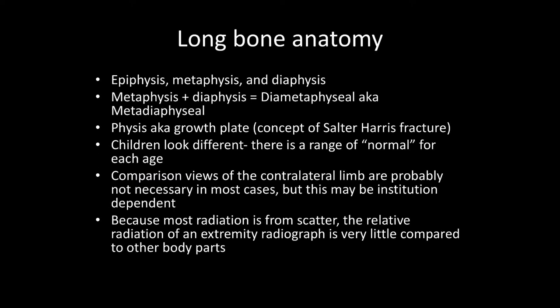To describe a pathologic process occurring in a region of overlap, you can say diametaphyseal or metadiaphyseal. Children look different — there is a range of normal for each age. After you look at hundreds or thousands of films, you know what that normal is. Maybe a couple of decades ago, the training was to take comparison views of the contralateral limb as an internal control, but it's probably not necessary in most cases and isn't usually part of my practice.